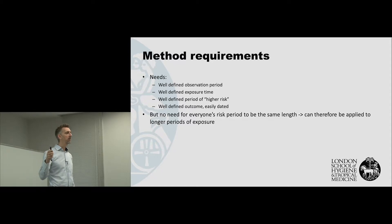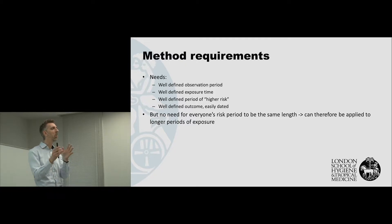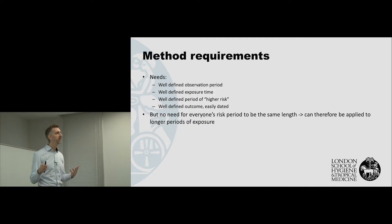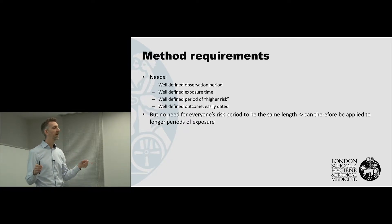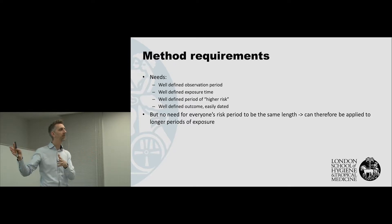The exposure time needs to be well-defined because if I'm going to split their observation period up into exposed and unexposed, I need to know when to do that. The period of high risk needs to be known to some extent. For the vaccine study, they knew in advance to break down the period into the first two days, three to fourteen days, and then later periods.